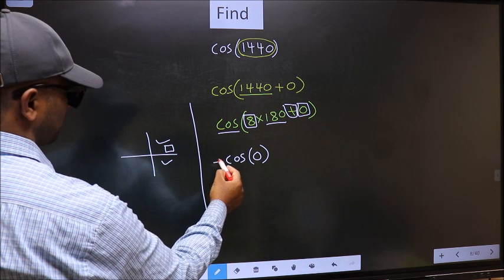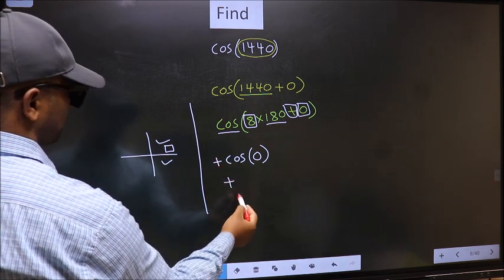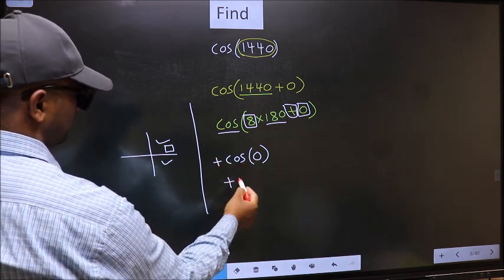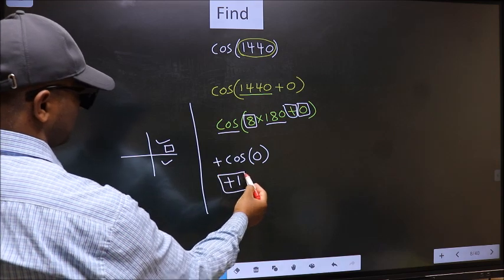So we should put plus. So plus cos 0 is 1. This is our answer.